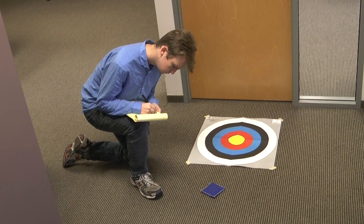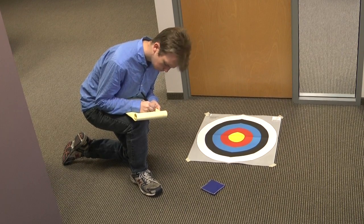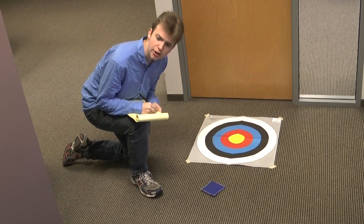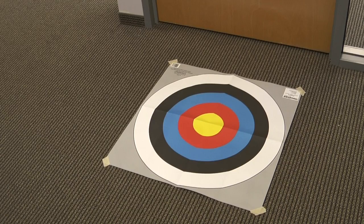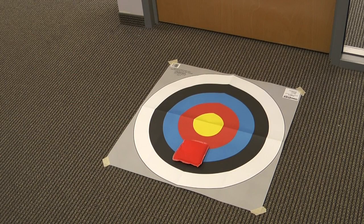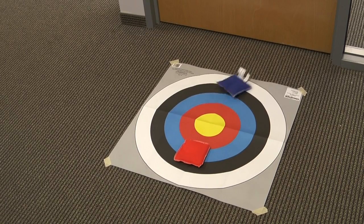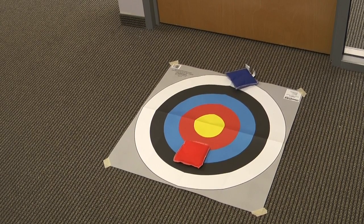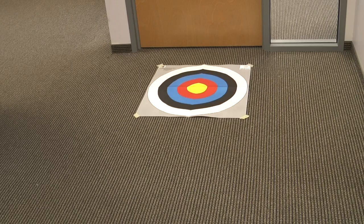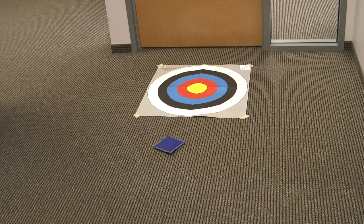Record the participant's scores based on where the beanbag landed. The inner circle is worth 5 points, the next zone is 4, and so on, with the outer ring receiving a score of 1. Beanbags that miss the target entirely are worth 0 points.